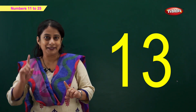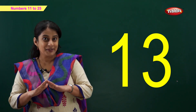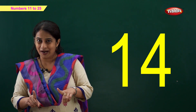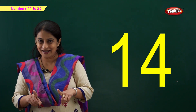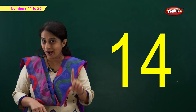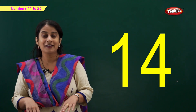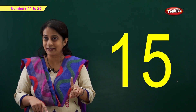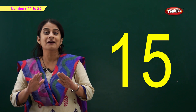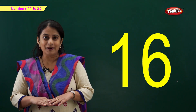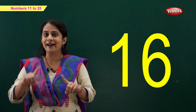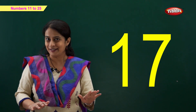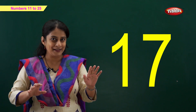1 and 3 becomes 13. Now which number will come? You guess — yes, number 14! 1 and 4 is 14. Now number 15: 1 and 5 is 15. Number 16: 1 and 6 is 16. Number 17: 1 and 7 is 17.